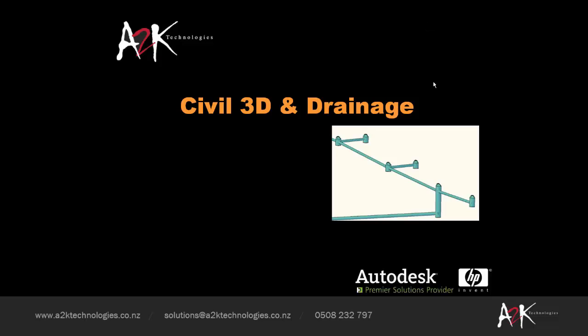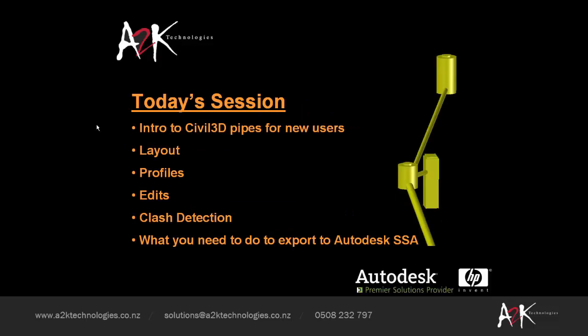In this session, we'll look at the pipes component of Civil 3D almost completely from a new user's perspective, as there are a number of users who haven't even looked at the pipes yet. The plan for today is to look at laying out pipes and sumps. This is a gravity system by default for storm water and sewer, but it can be adapted to pressure pipes by removing structures and working with pipes only.